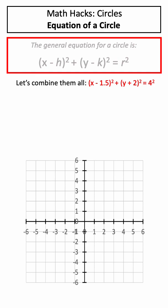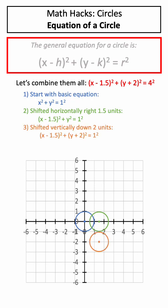Let's combine all these transformations to draw the circle shown here. First we start with the basic circle of radius 1. We then shift it right 1.5 units, then shift it down 2 units, and finally we'll make the radius 4 instead of 1, and now we have drawn the transformed circle.